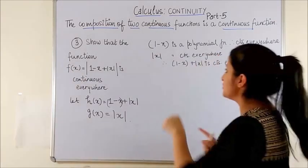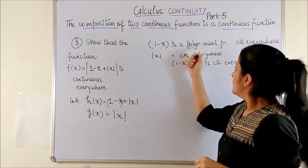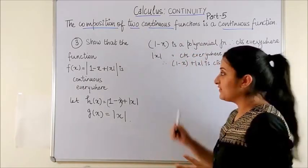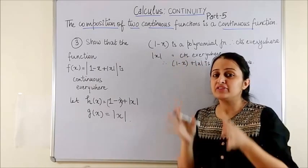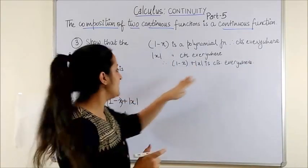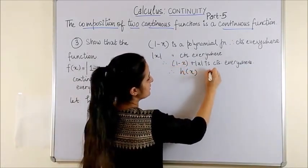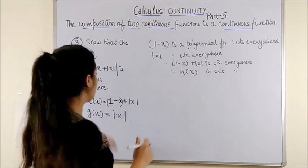Once again from your previous video, you can see 1 minus x is a polynomial function which is continuous everywhere and modulus is once again continuous everywhere. Therefore, their sum would be continuous everywhere. Therefore, hx is continuous.